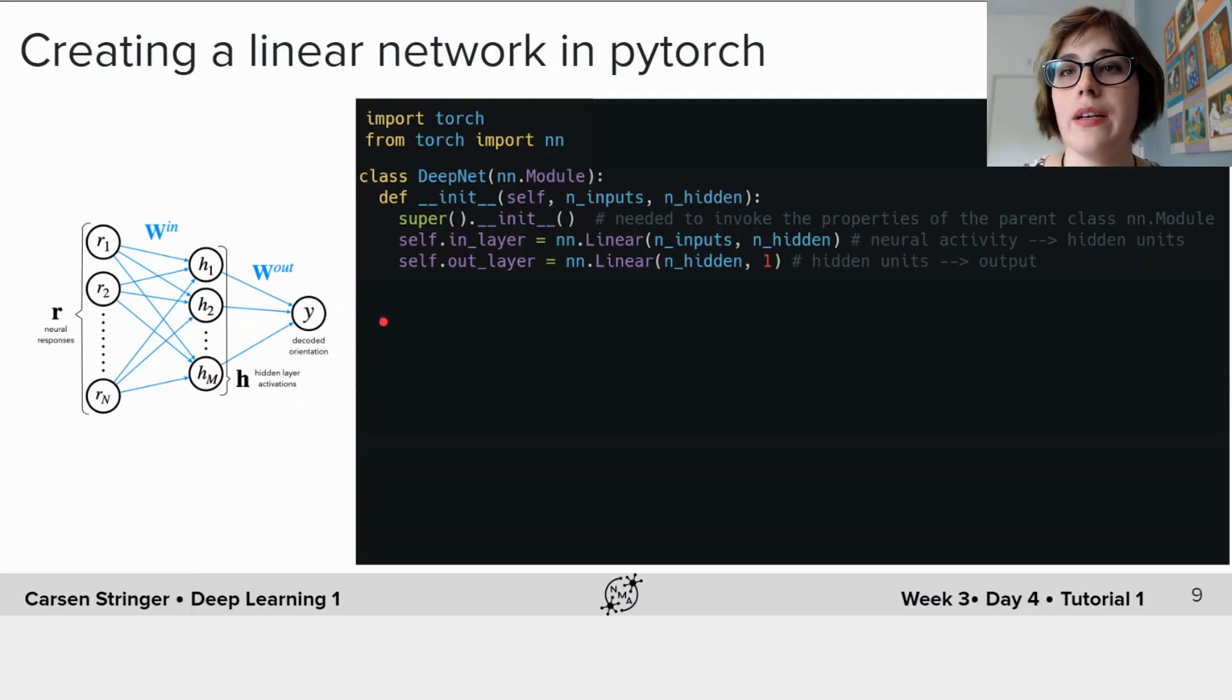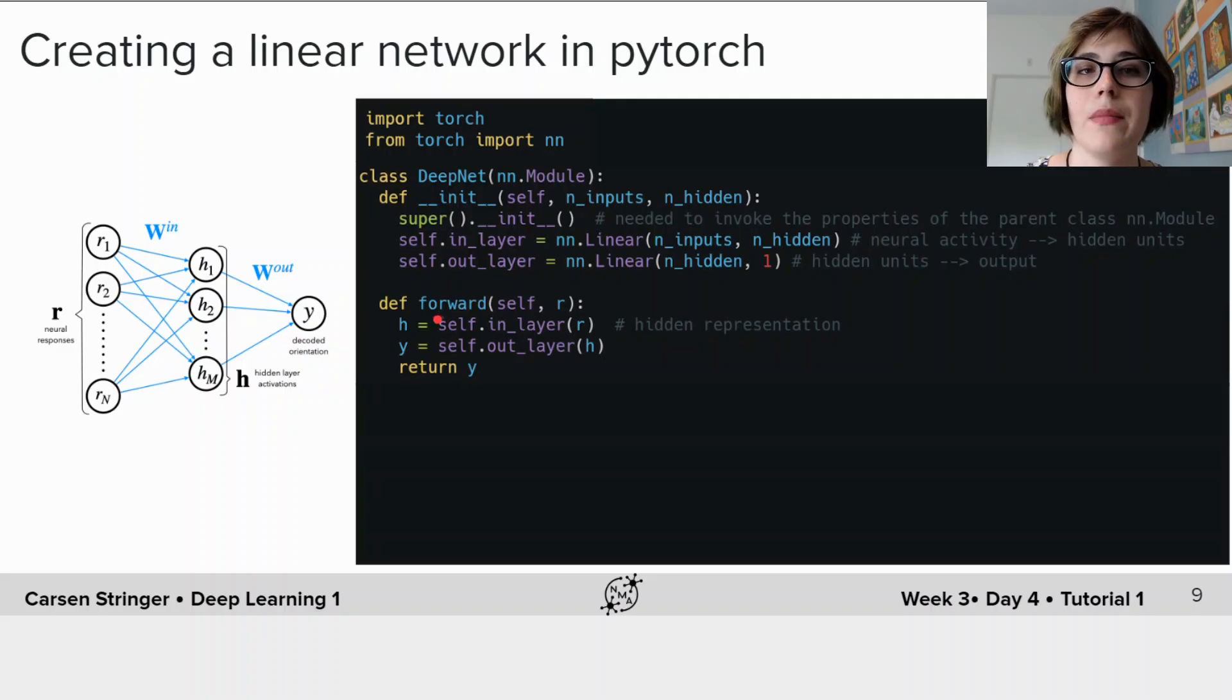And now we're going to add another method to this class called the forward method and this is the method that it runs when you call this class as a function. It takes as input r which are our neural responses here and they're passed through this first hidden layer to produce our activations h and then they're passed through this output layer to produce our final prediction of the stimulus y.